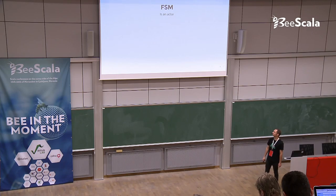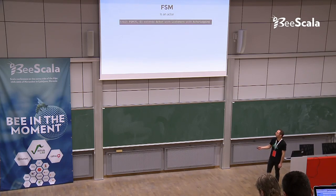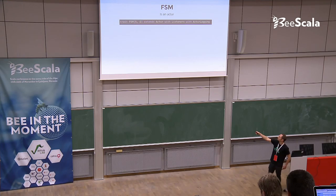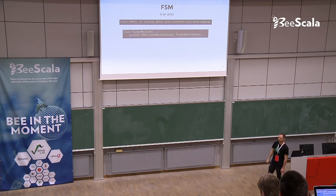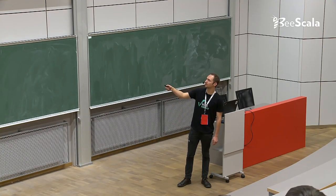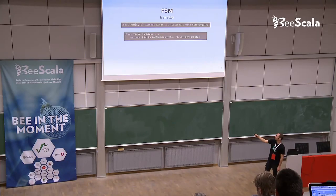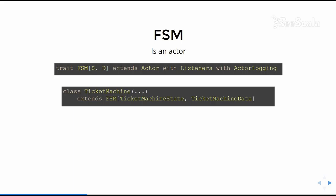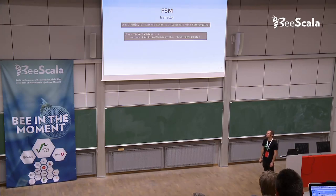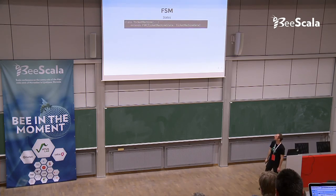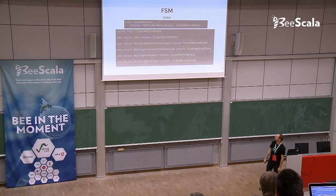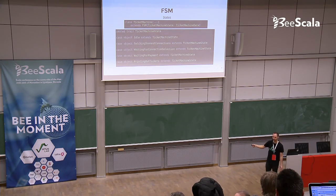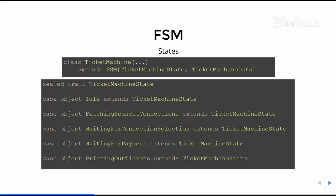Akka is kind enough to provide us an FSM trait, which is an actor. This trait is parametrized with two types: the state type and the data type. Here is my ticket machine FSM actor, and I provided the TicketMachineState supertype and TicketMachineData. Now we're going to see the state type.